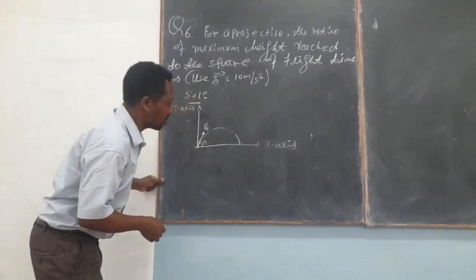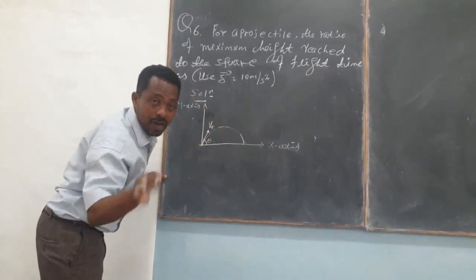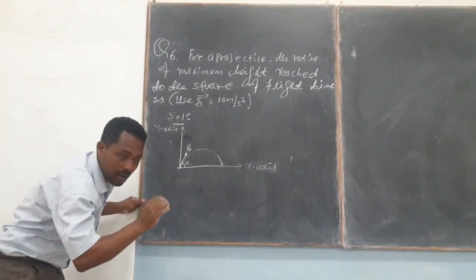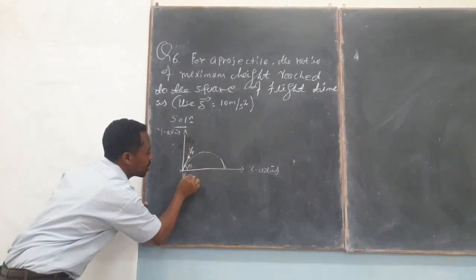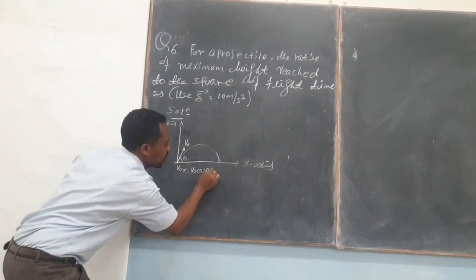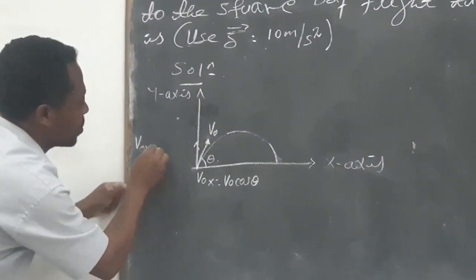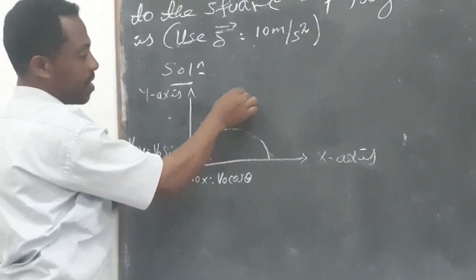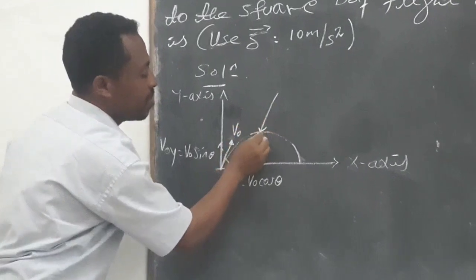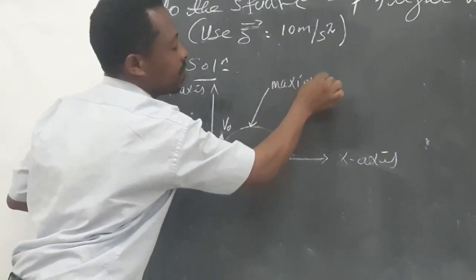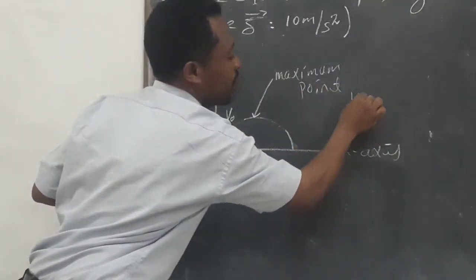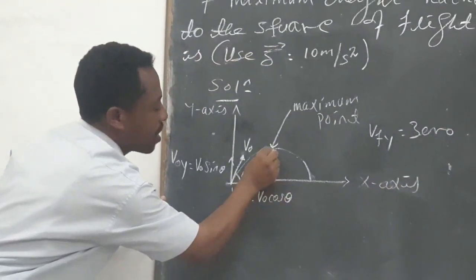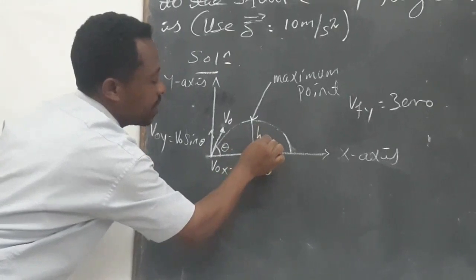What we have to do first, before finding the ratio of H maximum and the total time of flight, is we have to split the main vector V into its components — that is, V into its x and y components. After the object arrives at the maximum point, its vertical velocity component becomes zero. Therefore, this height is known as the maximum height.